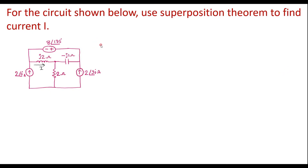In this video, let me consider one numerical on superposition theorem. For the circuit shown below, use superposition theorem to find current I. This is the given circuit. Here we can see that there is a 2 amp current source, a 2∠90° amp current source, and a voltage source. So this circuit consists of 2 current sources and 1 voltage source. We are supposed to find current I, where current I is flowing through the j2 ohm resistor.